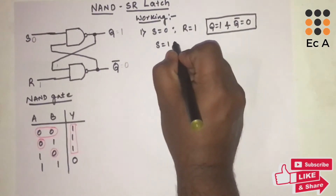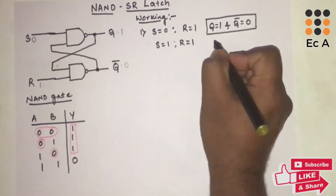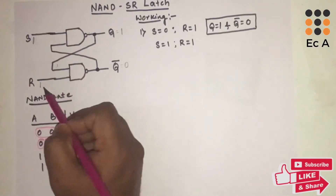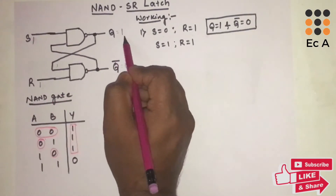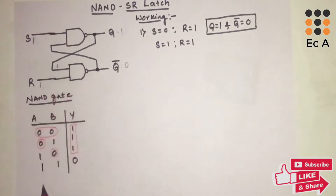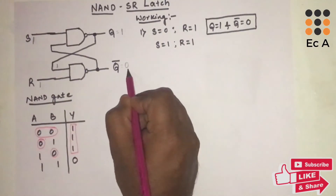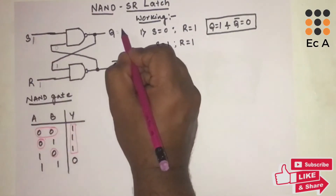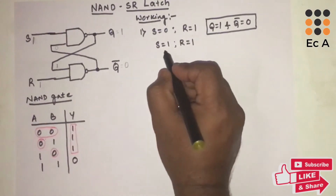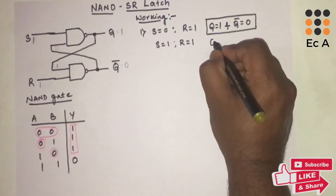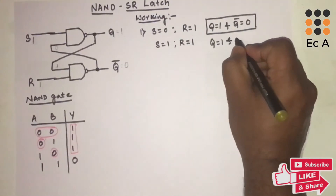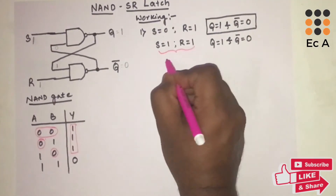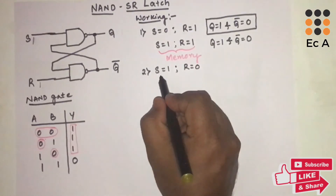Now we make S=1 and R=1. The previous output Q was 1, so this 1 appears at the input of the second gate. With both inputs 1, Q̄ remains 0. This 0 feeds back, so with inputs 1 and 0, Q remains 1. When S=1 and R=1, the output is retained. We call this state the memory state.